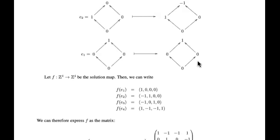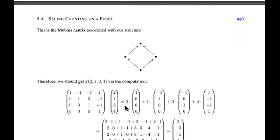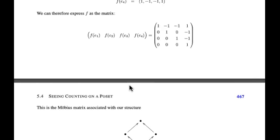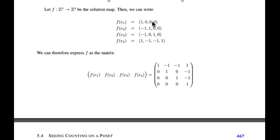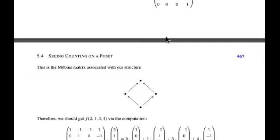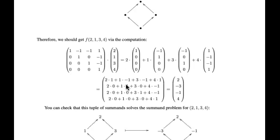Once we have the Möbius matrix for this particular poset structure, how do we solve things? We take our cumulative sums (2, 1, 3, 4) and matrix-multiply by this matrix — that gives us the result. It's the same as saying 2 times the image of E1, plus 1 times the image of E2, plus 3 times the image of E3, plus 4 times the image of E4. Then we add those up or matrix-multiply to get the summand tuple.